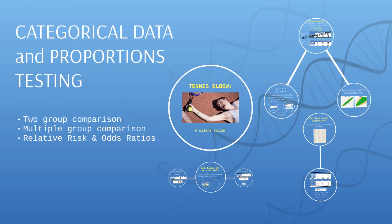Hi, it's Justin Zeltzer again on ZStatistics.com, or my YouTube channel of the same name, presenting here the second video in a set of two on categorical data and proportions testing. The first video dealt with two group comparisons and multiple group comparisons, so we're looking at both the Z test and the chi-squared test.